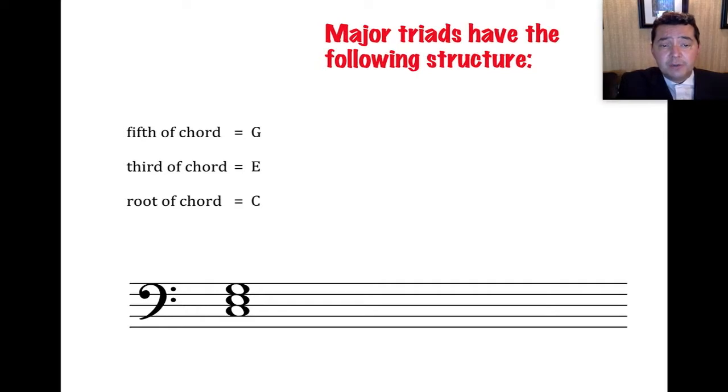Major triads have the following structure. From the root up to the third must be a major third. So C up to D is a whole step. D up to E is a whole step. Or perhaps you learned the major third as four semitones, four half steps. So there's C, one, two, three, four. So C up to E is a major third.